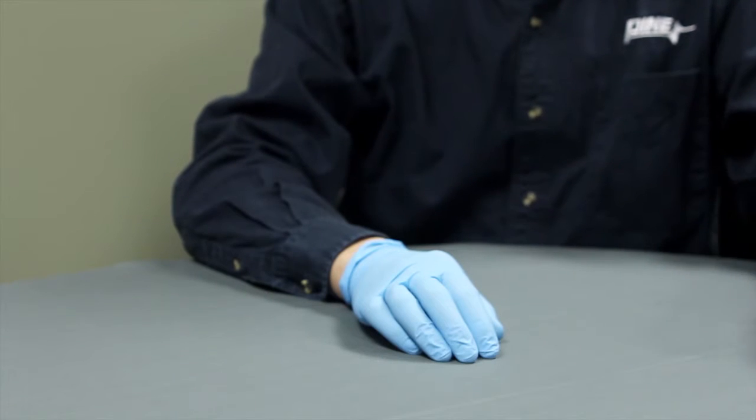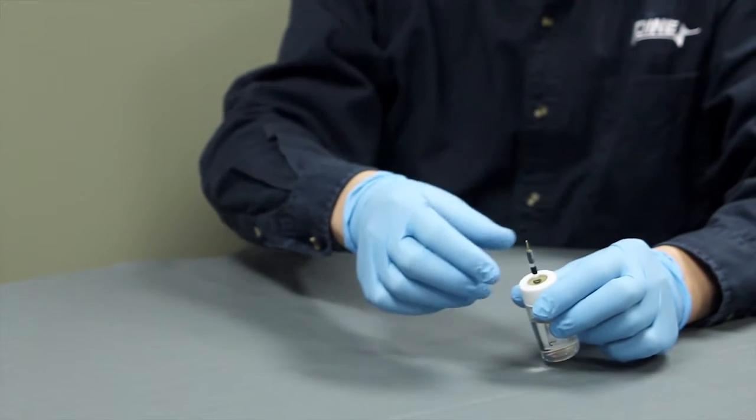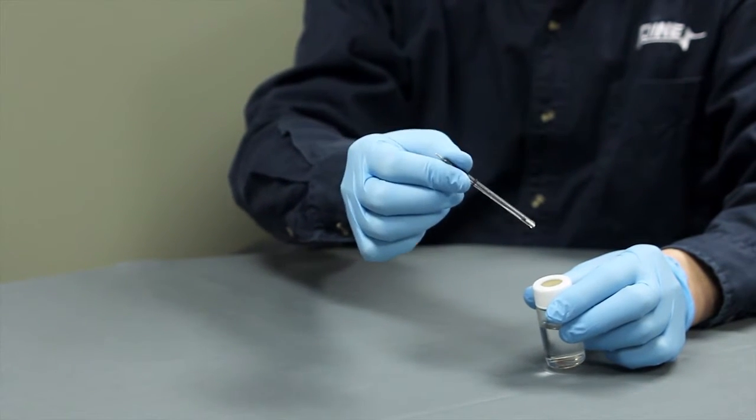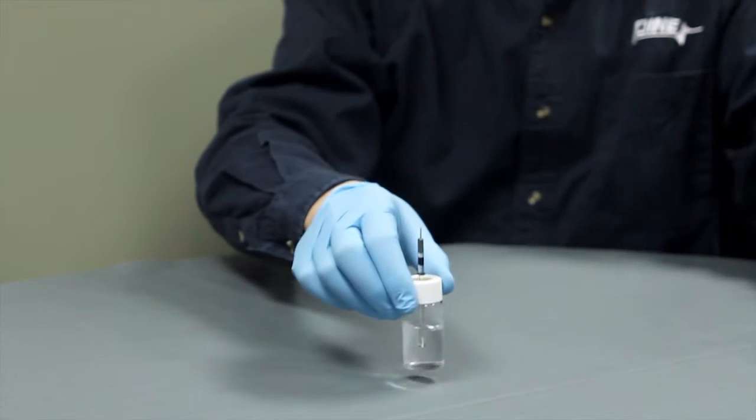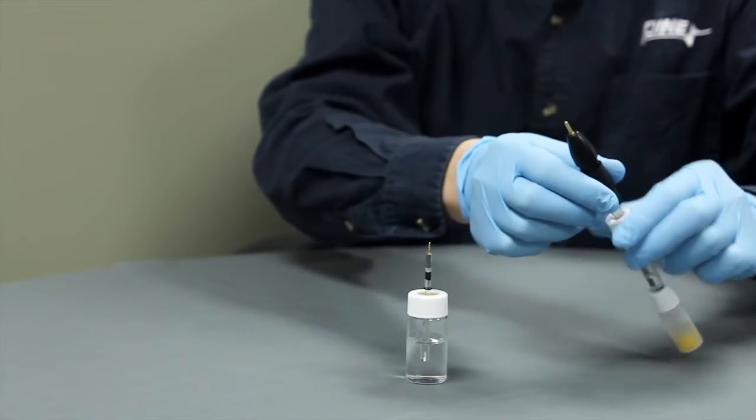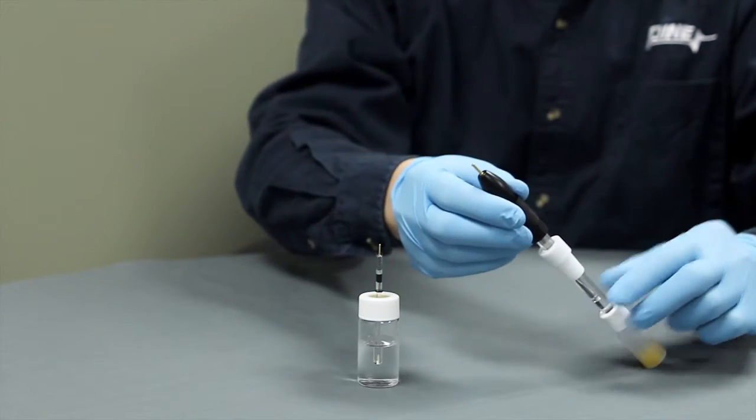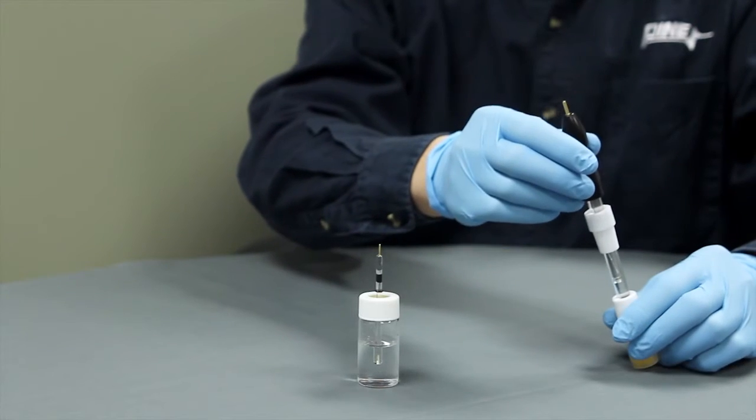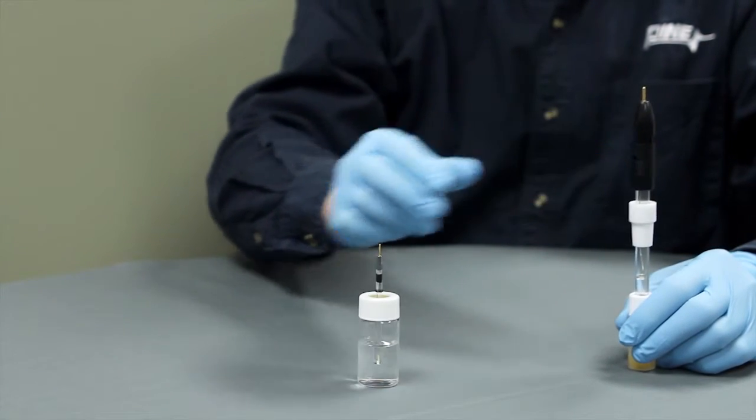Today we will talk about Pine's different reference electrodes. We have two sizes of reference electrodes. The first is our 3.43 millimeter diameter low-profile reference electrode. The second one, which is the one we will talk about in this video, is our standard 9.5 millimeter diameter reference electrode.